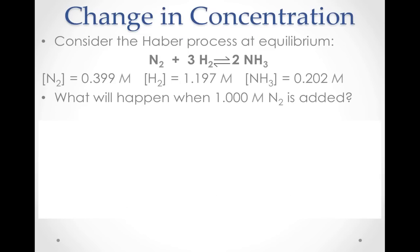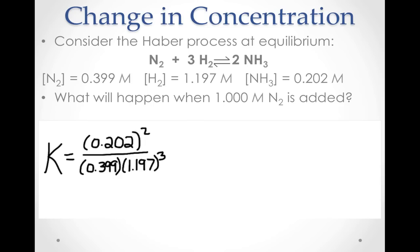Here's an example involving a change in concentration. If the Haber process comes to equilibrium with this equilibrium pressure, what will happen if the nitrogen concentration is increased by 1.000 molar? To answer this question, let's consider how the equilibrium constant K compares to the reaction quotient from the new concentrations. Using the equilibrium concentrations that are given, we see that K is equal to 0.0596.